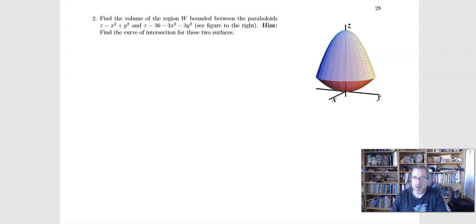The region W is between the paraboloids, Z equals X squared plus Y squared. If you did the review that we did earlier, you saw that before. So X squared plus Y squared equals Z is this kind of reddish paraboloid down here. And then 36 minus 3X squared minus Y squared.